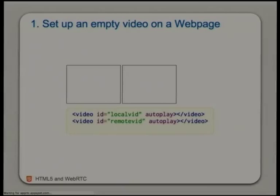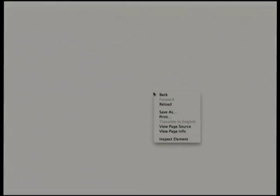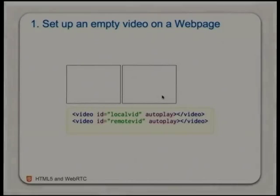So we'll replicate this step by step. The first thing we need are two video elements — one for the local video and one for the remote video. That's the code. Put it on autoplay so you don't have to press play to get your remote stream playing. It will just work.